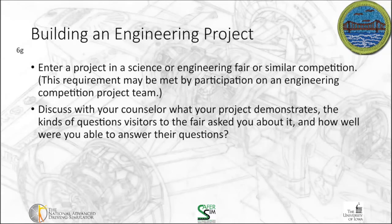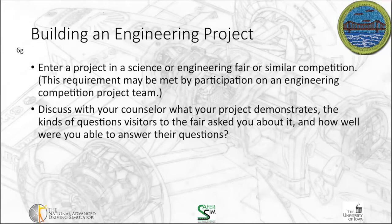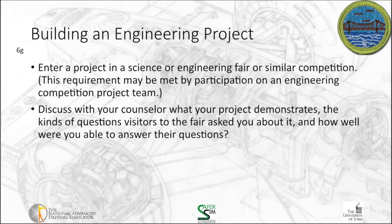The last option is 6G, which is to build an engineering project. We want you to build an engineering project and enter it in a science or engineering fair or similar competition. Obviously this one is going to require a longer period of time to do than some of the other ones, but it is a very rewarding opportunity. This requirement may also be met by participation on an engineering competition project team. Discuss with your counselor what your project demonstrates, the kind of questions visitors to the fair asked you, and how well you were able to answer those questions. For those on robotics teams, this may be a good way to complete this requirement, since most of those competitions start with a general challenge that you have to meet by designing a robot. If you're on a robotics team, this may be an easy way to get 6G done by doing what you enjoy while also working on this requirement.